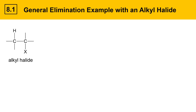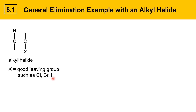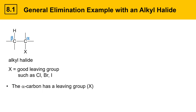In this example we have a species that has a carbon with an X, which is a good leaving group. Here X is any good leaving group, but for alkyl halides it would be chloride, bromide, or iodide. We're going to classify some of the positions on the alkyl halide. The carbon attached to the leaving group is called the alpha position. The carbon next to the alpha position is called the beta position, and the beta carbon has at least one proton.